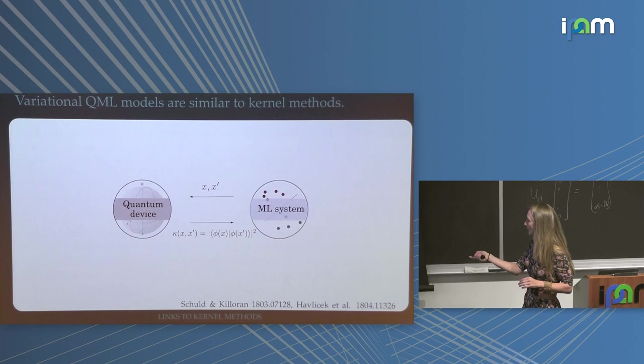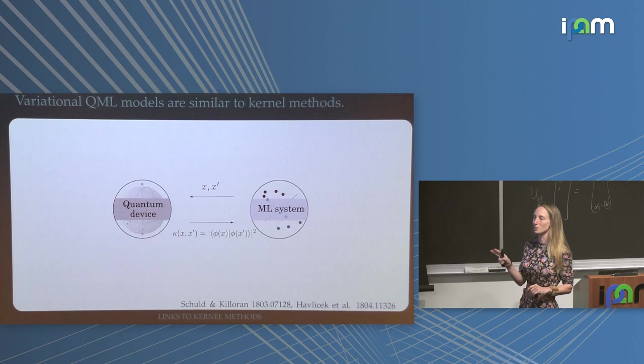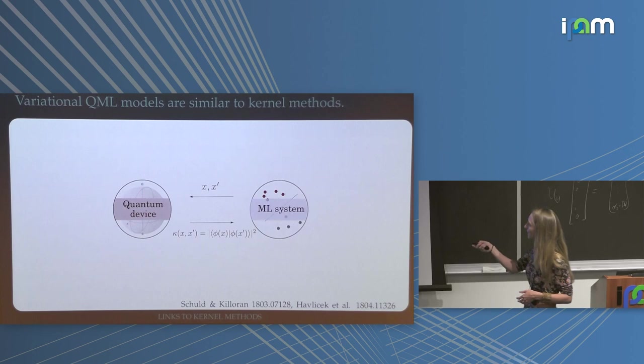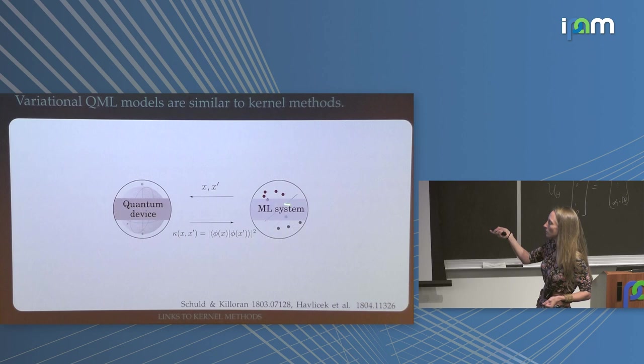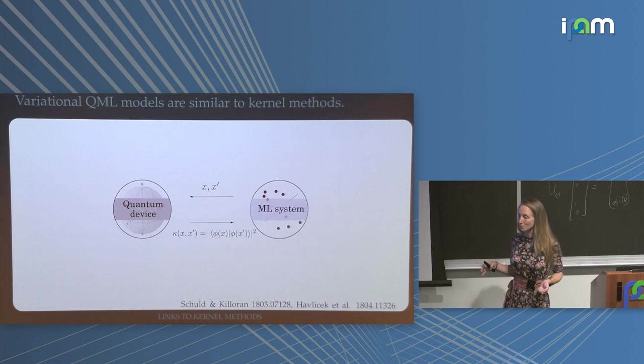This idea came out in two papers — the IBM team and our team — literally close to each other in time, containing exactly the same idea. The IBM one made it to Nature because they implemented it on a two-qubit device, which sounds small but is really, really hard to do. The idea: your kernel method sends inputs to a quantum device, and the quantum device gives you kernel values. So a quantum computer is just a kernel machine.